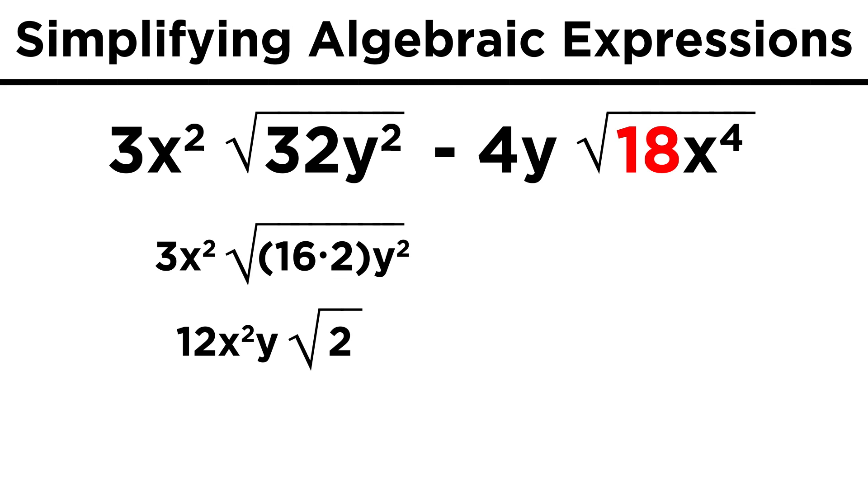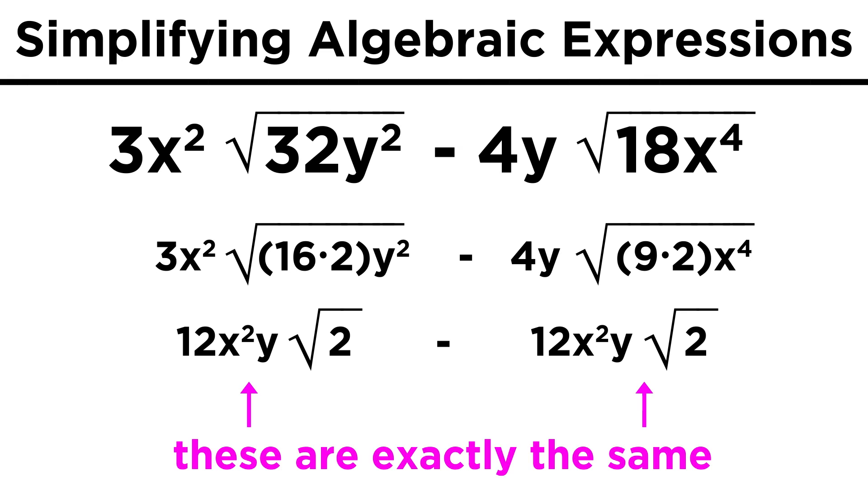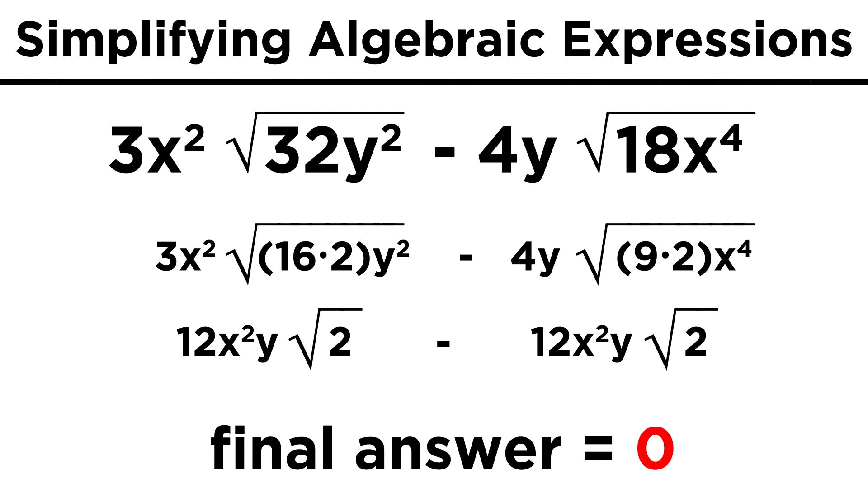Again with the other term, eighteen doesn't work, but nine times two means we can take out a three and an x squared, and combining like terms gives us twelve x squared y root two. These terms are the same, and anything minus itself is zero, so this whole expression actually simplifies to zero.